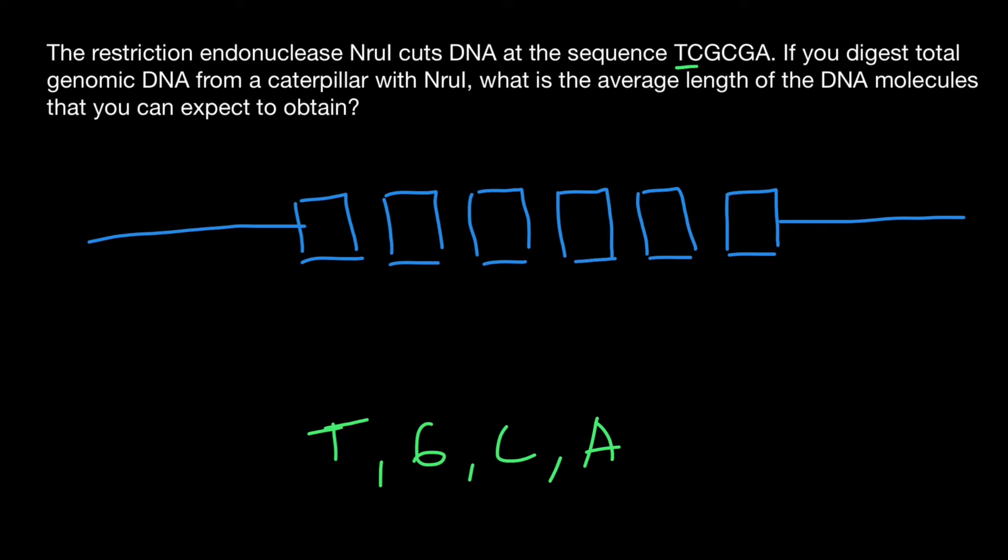And you will say that it's going to be one quarter because it can be thymine, it can be guanine, cytosine, or adenine, four bases total. So the probability that this is going to be thymine is going to be one out of four bases.